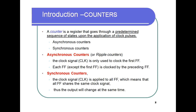Asynchronous counters are also called ripple counters. In these, the clock signal is only used to clock the first flip-flop, not the others. Each flip-flop is clocked by the preceding flip-flop, meaning every preceding flip-flop gives its output as the clock input to the next one.